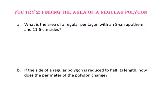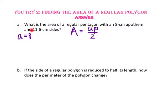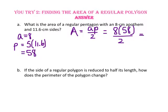Pause the video and do you try number 2. What is the area of a regular pentagon with an 8-centimeter apothem and an 11.6-centimeter side? Using the formula area equals the apothem times the perimeter divided by 2, the apothem is 8 centimeters and the perimeter is 5 sides times 11.6, which is 58 centimeters. Substituting, 8 times 58 is 464, and dividing by 2, we get 232 centimeters squared.